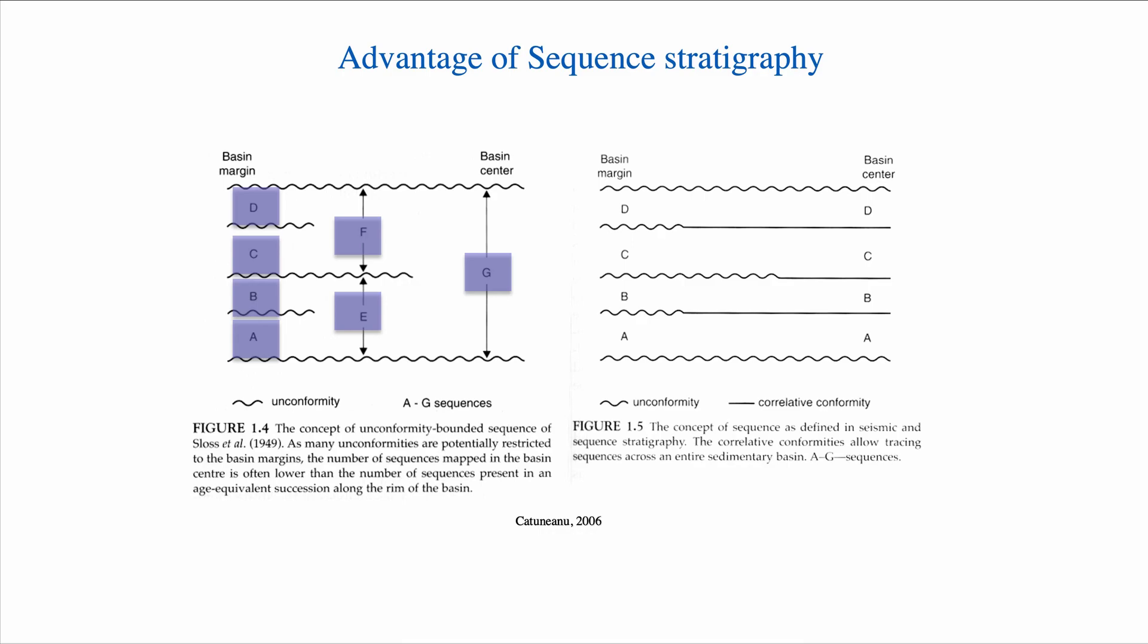So sequence stratigraphy takes the idea of allostratigraphy further and recognizes that it's not just using unconformity, but also using an imaginary surface that represents a conformable succession, but that trace that represents the time of the unconformity.